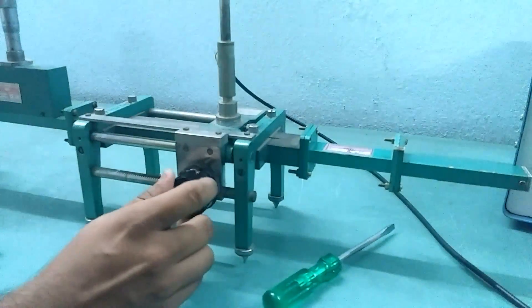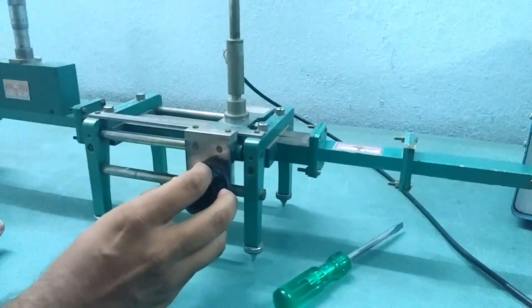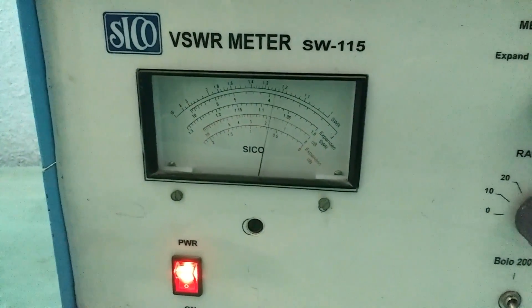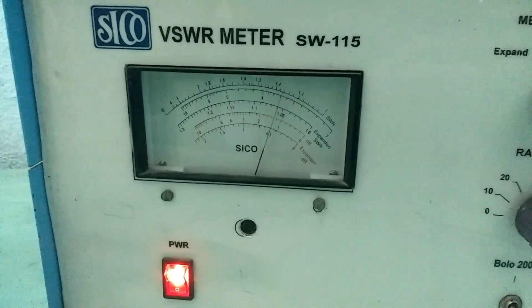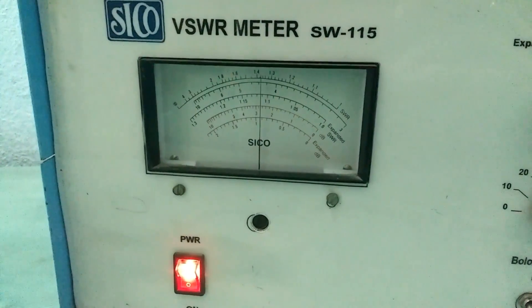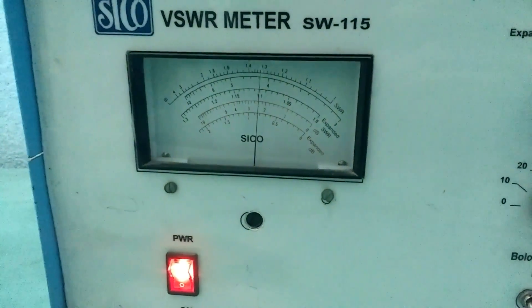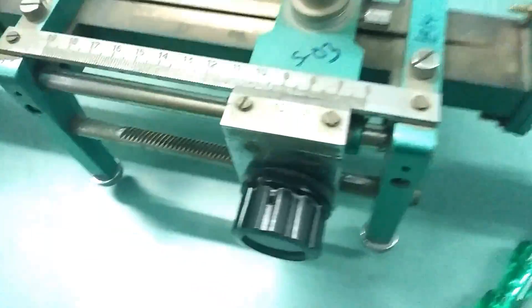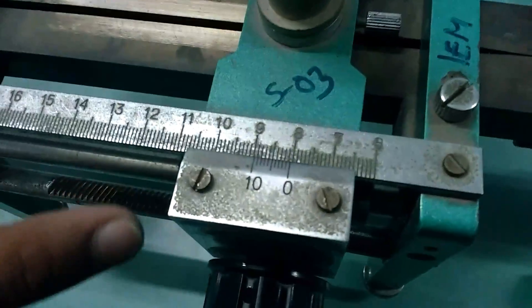Then we will rotate the knob and move it to the left and we will see that we will get a first minima. This is the first minimum position and we will note the reading.